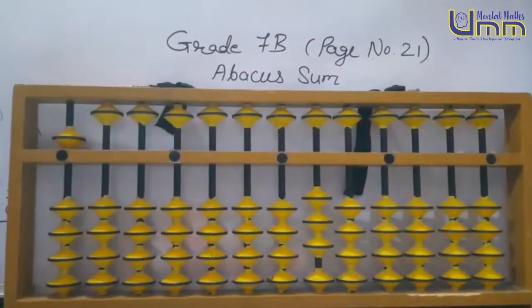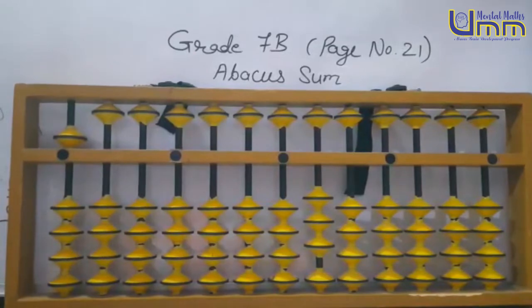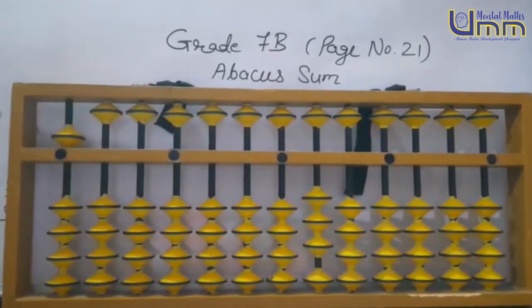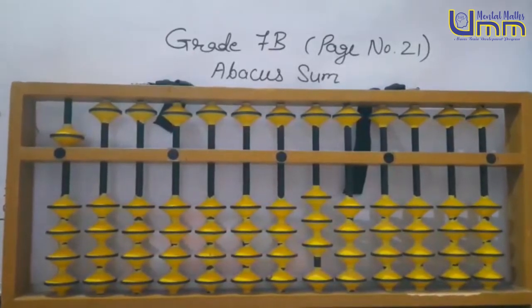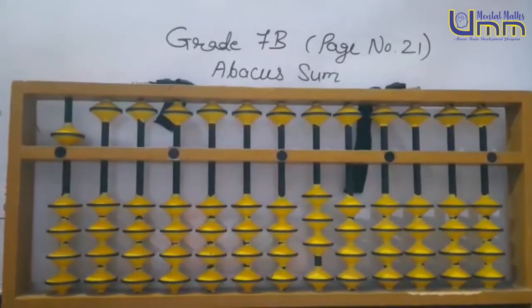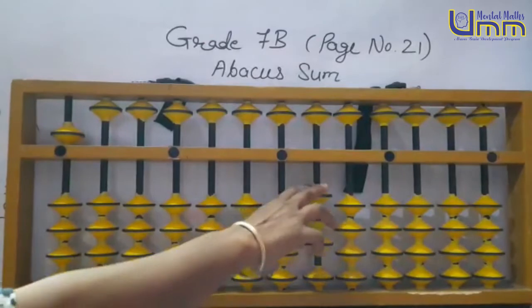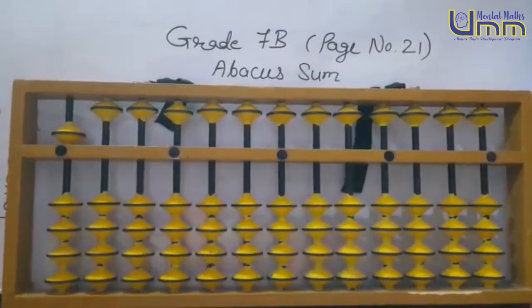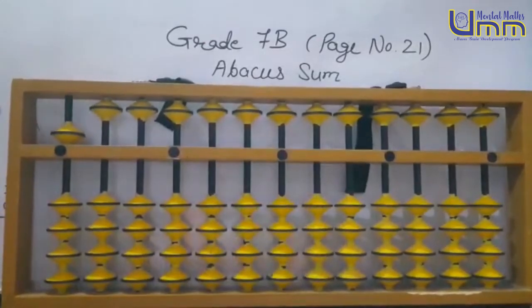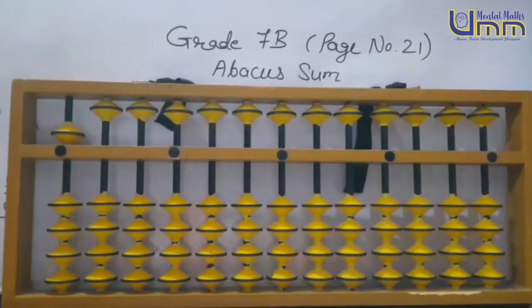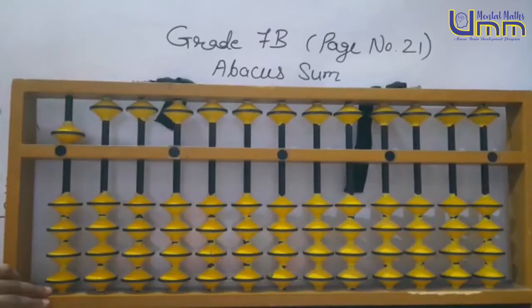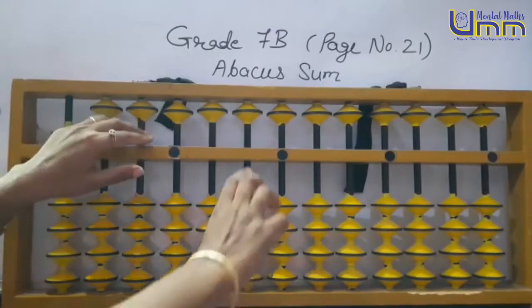Hello students, page number 21 abacus sum. First sum: 74 — 70 directly, 4 directly.